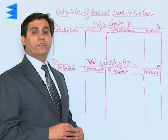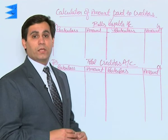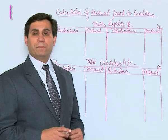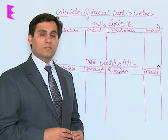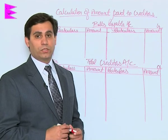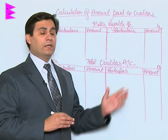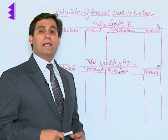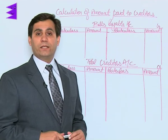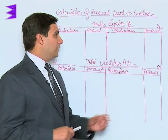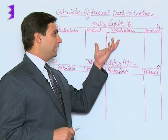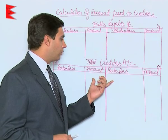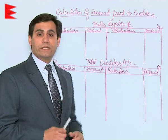Just as in the case of debtors we try and calculate the amount paid to debtors by preparing two accounts — that is bills receivable account and debtors account — similarly in the case of creditors we will have to calculate the amount paid to creditors. This can be done by preparing these two accounts simultaneously: bills payable account and total creditors account.